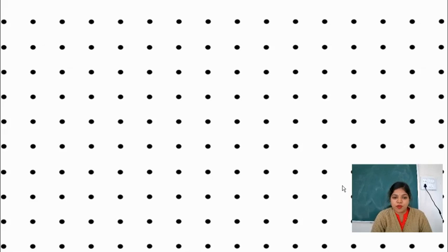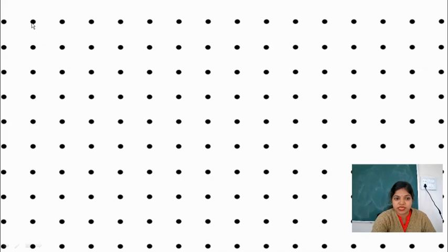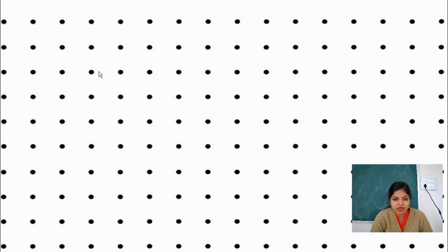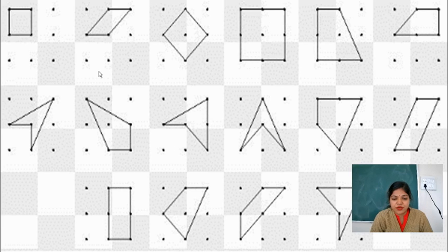Now you can see on the screen — this is a geosheet. You can see the dots on it; the distance between two dots is 1 cm. We can draw shapes on it. When you draw the shapes on it you will enjoy this activity. You can draw any kind of shape on this geosheet, as you can see here.